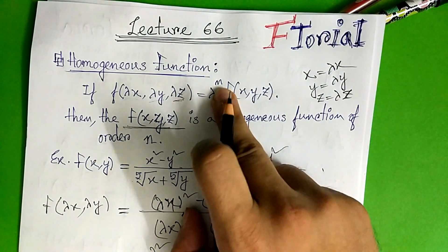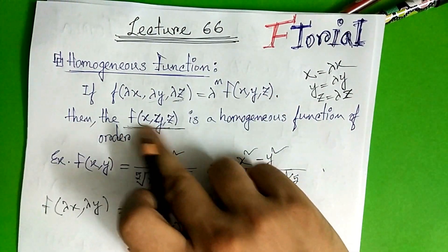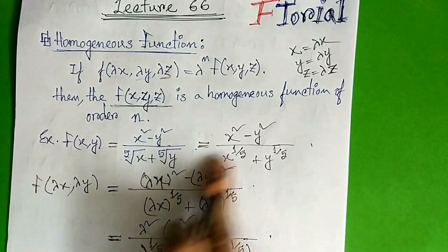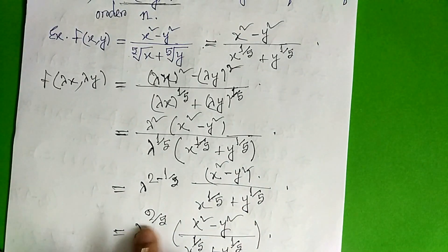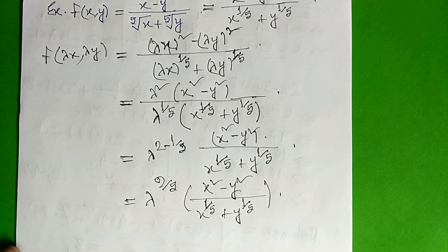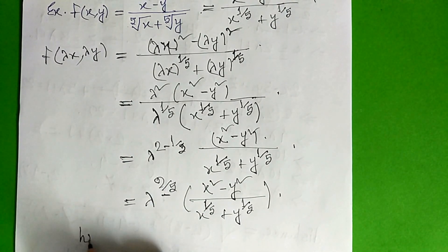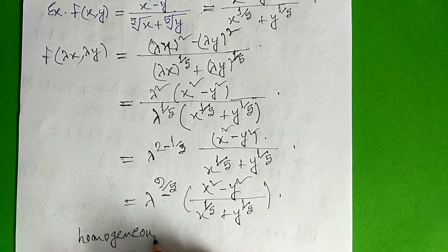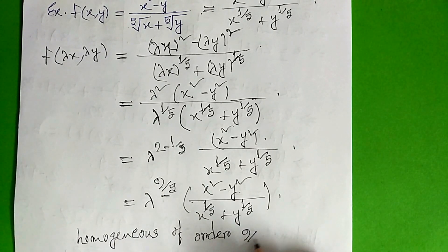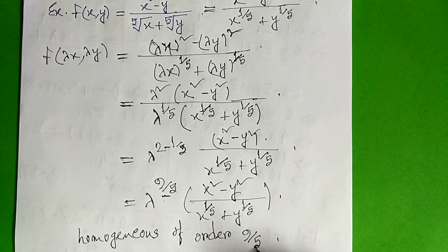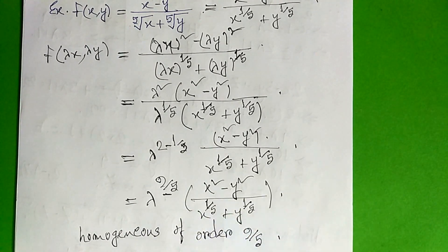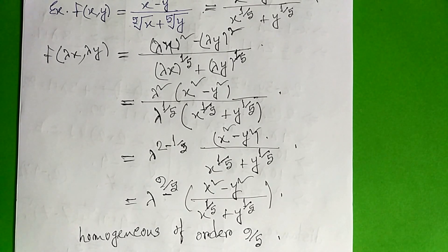So we can see that the lambda power is equal to 1 by 5. You can see that the lambda power is equal to 1 by 8. So this is the homogeneous function of order 9 by 5, homogeneous function of order 10 by 6, homogeneous function of order 9 by 6, and homogeneous function of order 9 by 8.